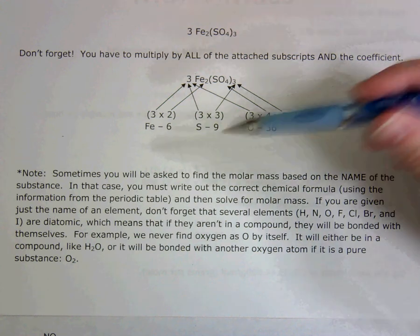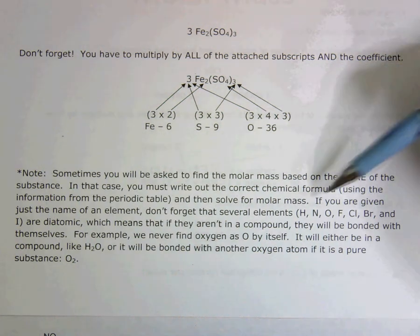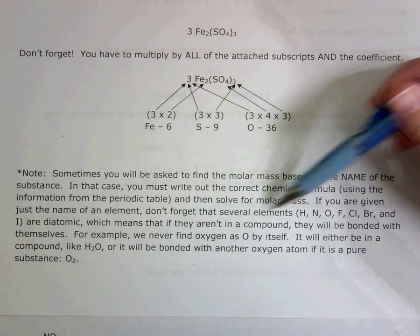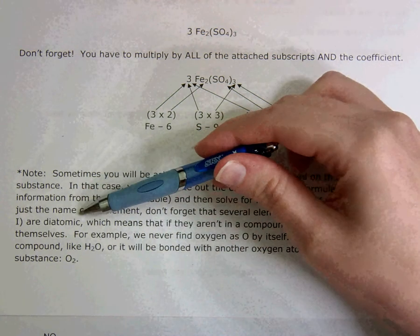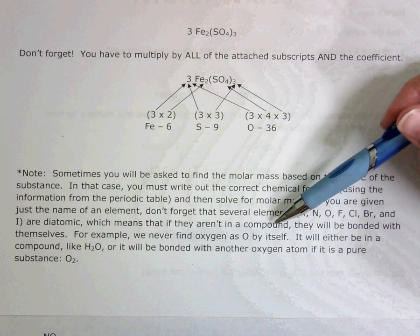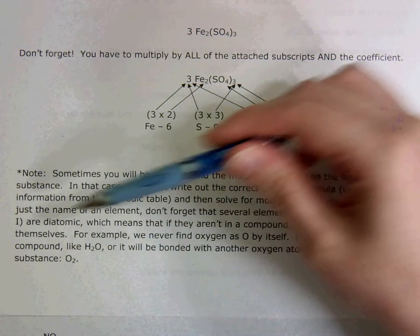How are they special? It says, don't forget that several elements, H, N, O, F, Cl, Br, and I are diatomic, which means that if they aren't in a compound, they will be bonded with themselves.